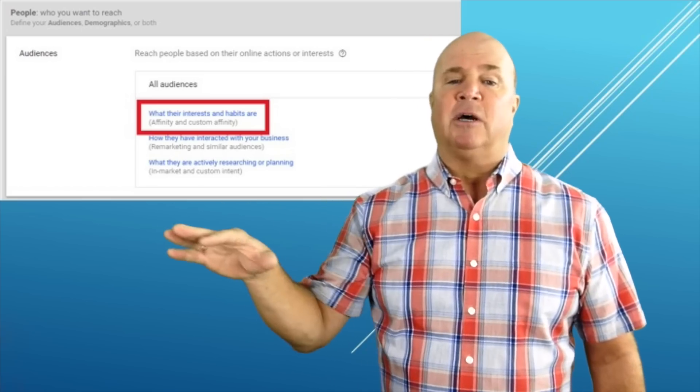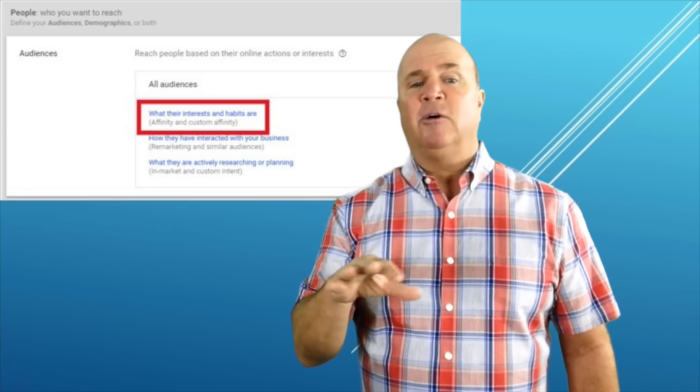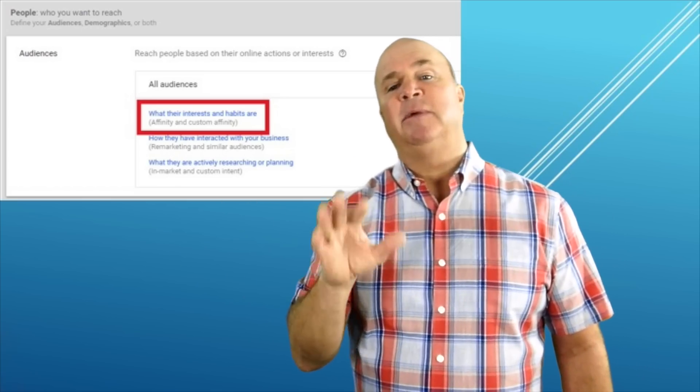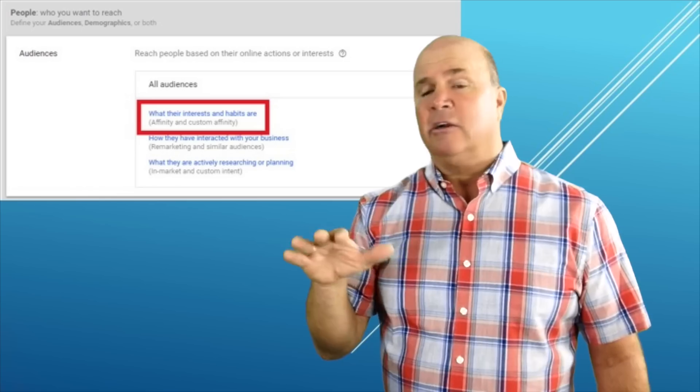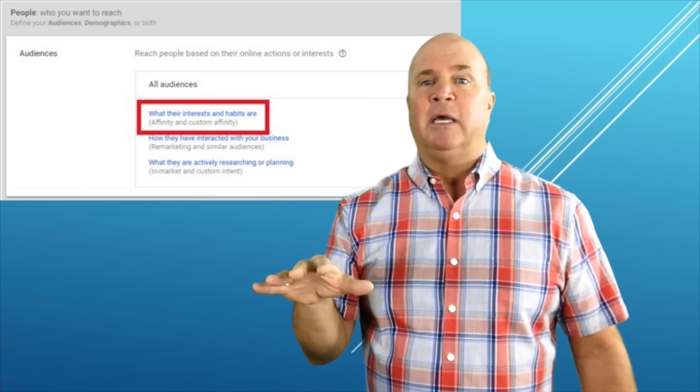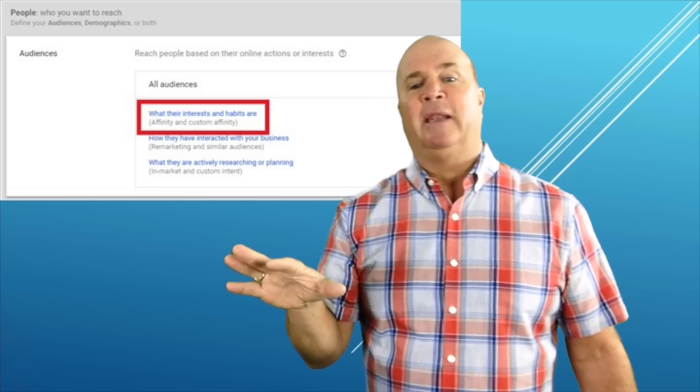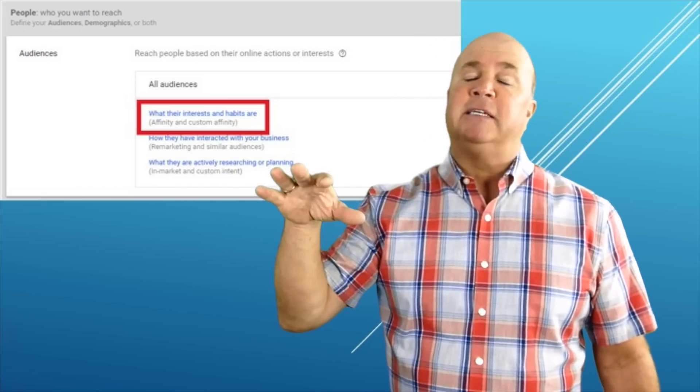Just simply go under affinity and custom affinity. And under custom affinity you name it, you press on it, you expand it, and it offers to find your audiences based on their interests.